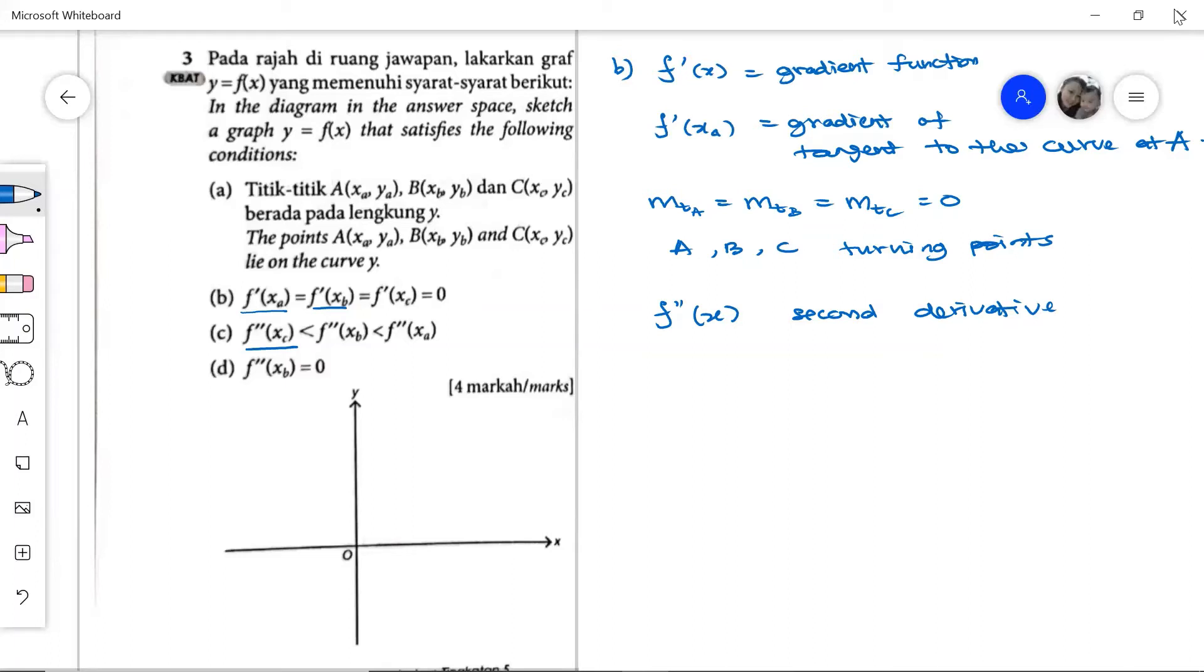We still do not know what is that. And lastly, we are given that the second derivative at point b is zero. So with that, from part c, f''(xc) less than f''(xb), less than f''(xa). Now if this is zero, anything that is less than zero will be negative value. And anything that is greater than zero will be positive value.